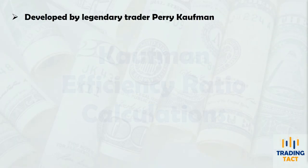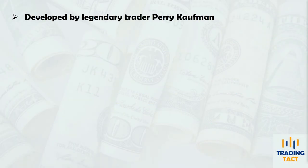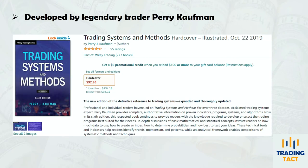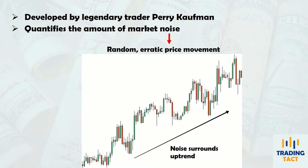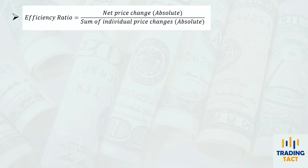The Kaufman Efficiency Ratio was developed by Perry Kaufman and was introduced in his excellent book, Trading Systems and Methods. The efficiency ratio quantifies the amount of market noise. Noise is the random and erratic price movement that surrounds any underlying market direction. The efficiency ratio is calculated as the absolute net change in price divided by the absolute sum of the individual price changes over that period. Closing prices are used.